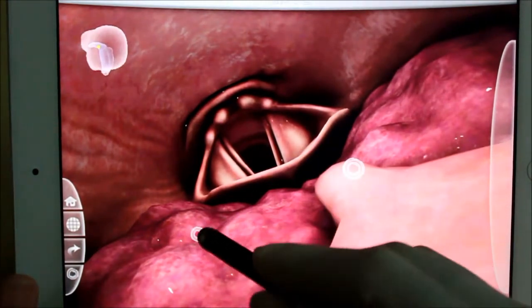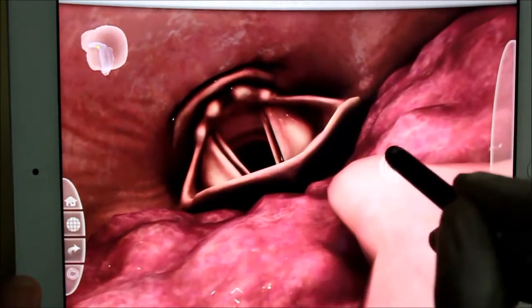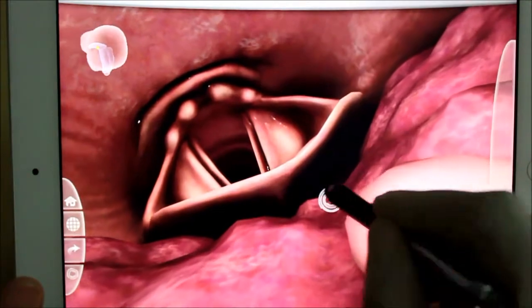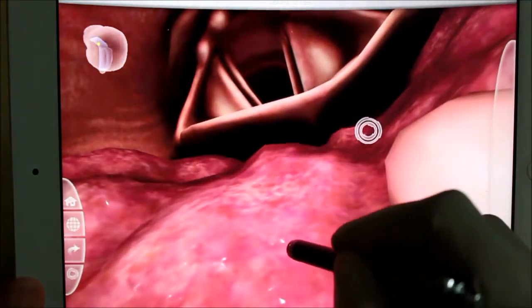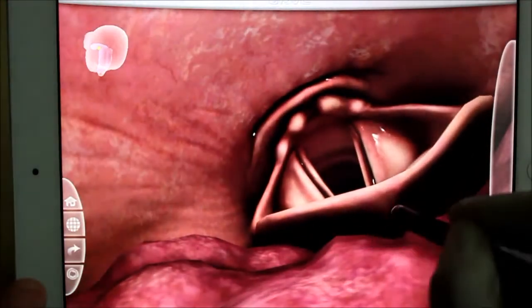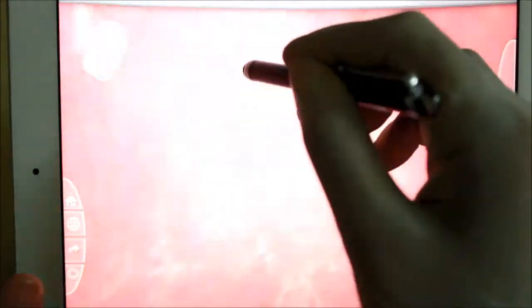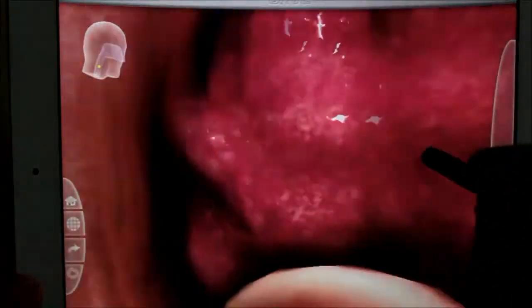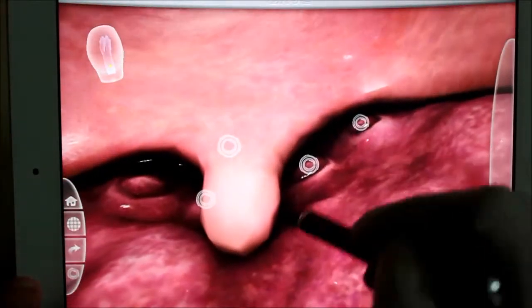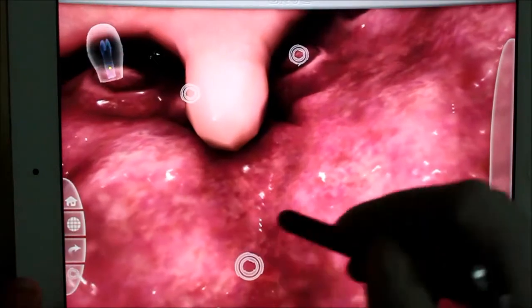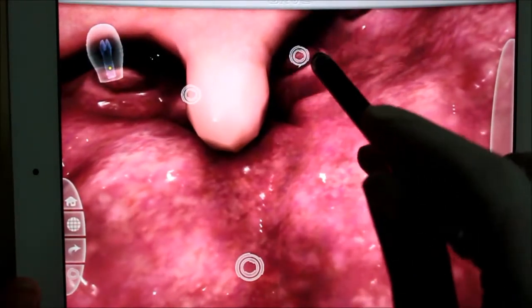It's the uvula. Now we can also appreciate the lingual tonsils as you can see here. Then going more deep we can see the dorsum of tongue, the posterior part of tongue. We cannot see the oral cavity, only the pharyngeal part. We can see the oropharynx. Now we have entered into the oropharynx. Looking from here forward